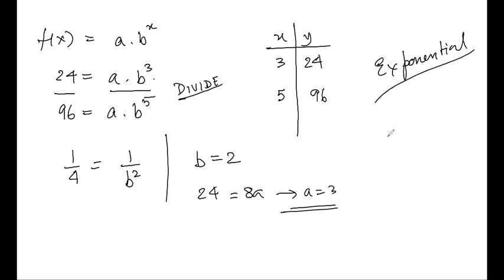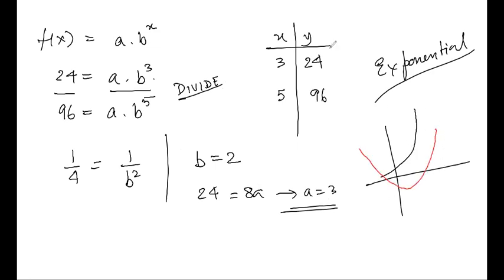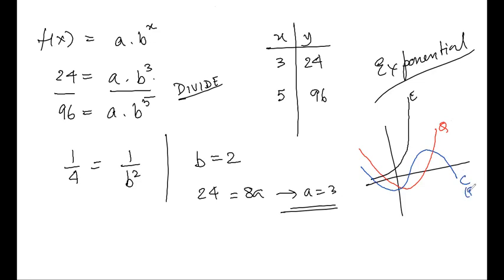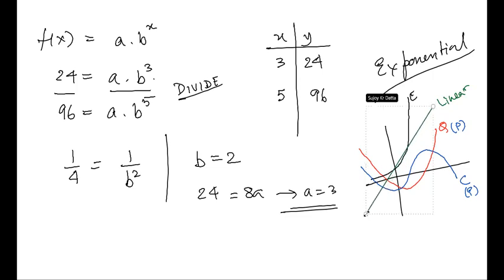Graphically, an exponential function is typically much steeper than a quadratic or polynomial. A quadratic is relatively flat and parabolic, while a cubic has more than two roots. A linear function is simply a straight line. These differences in shape help distinguish the function types visually.